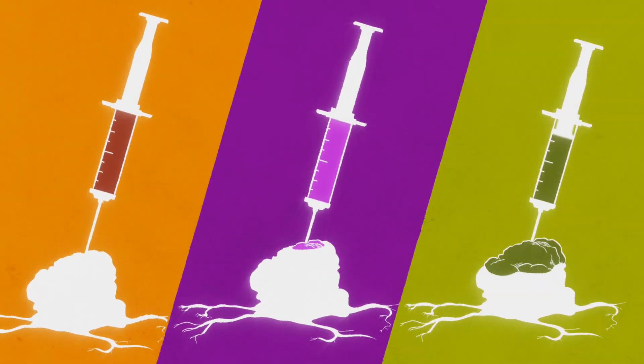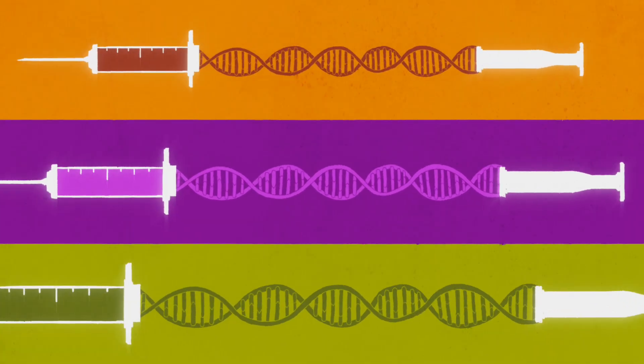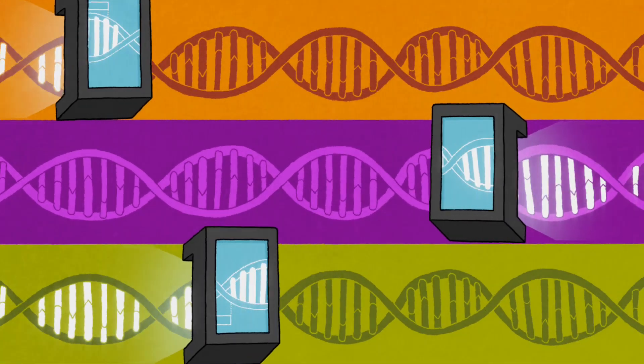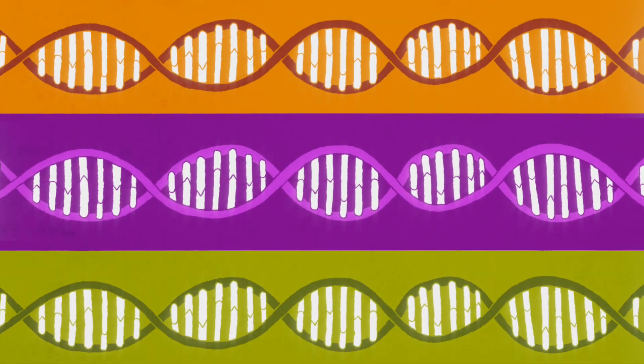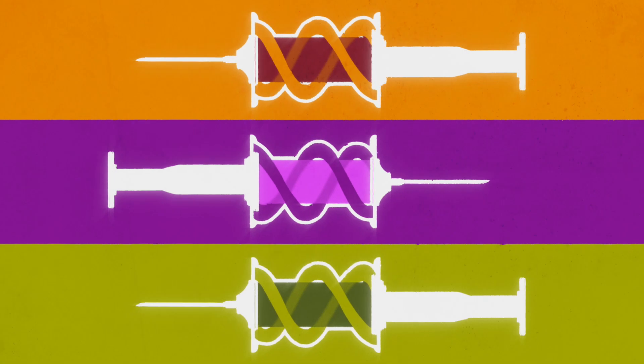Personalized cancer vaccines start with sequencing the genome of an individual person's tumor. From this, it's possible to identify the neoantigens amongst a sea of other genomic information through sophisticated software. The information about an individual's neoantigens is encoded into a message in the form of mRNA, which is then delivered in the form of a vaccine.